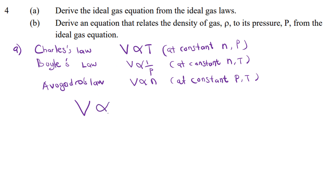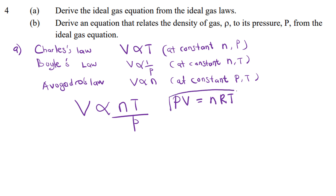Combining these, V is directly proportional to nT/P. Introducing R as the universal gas constant, we get PV = nRT. This is the ideal gas equation, where R is the ideal gas constant with a value of 0.0821 liter·atm per mol per Kelvin.